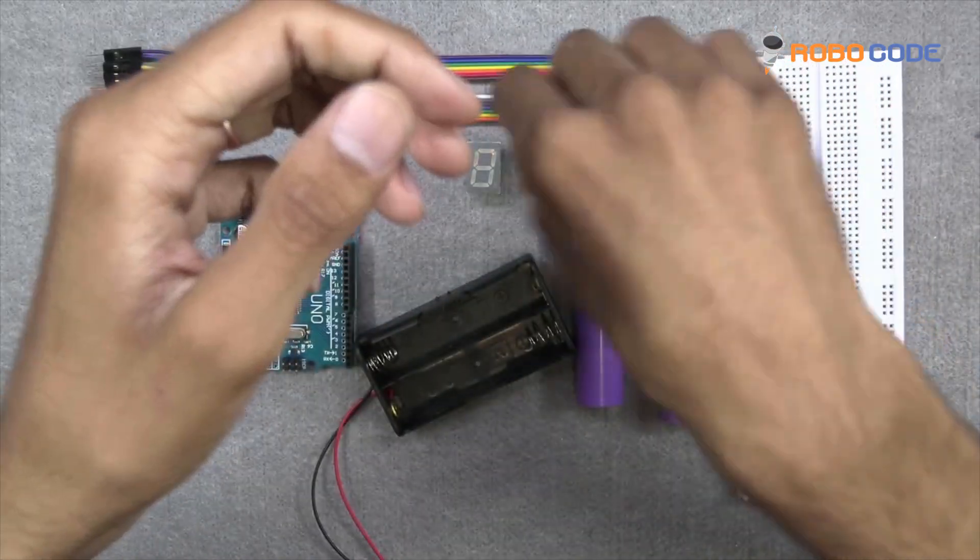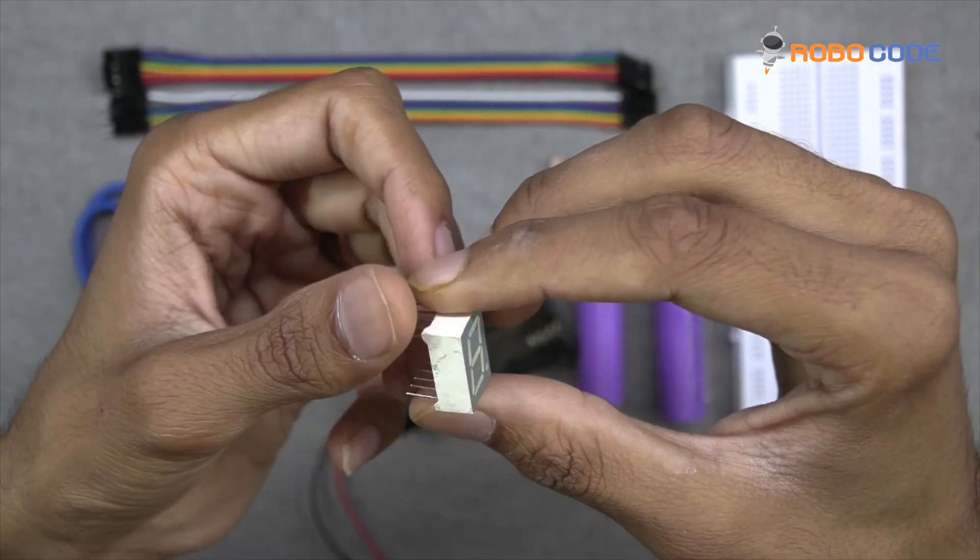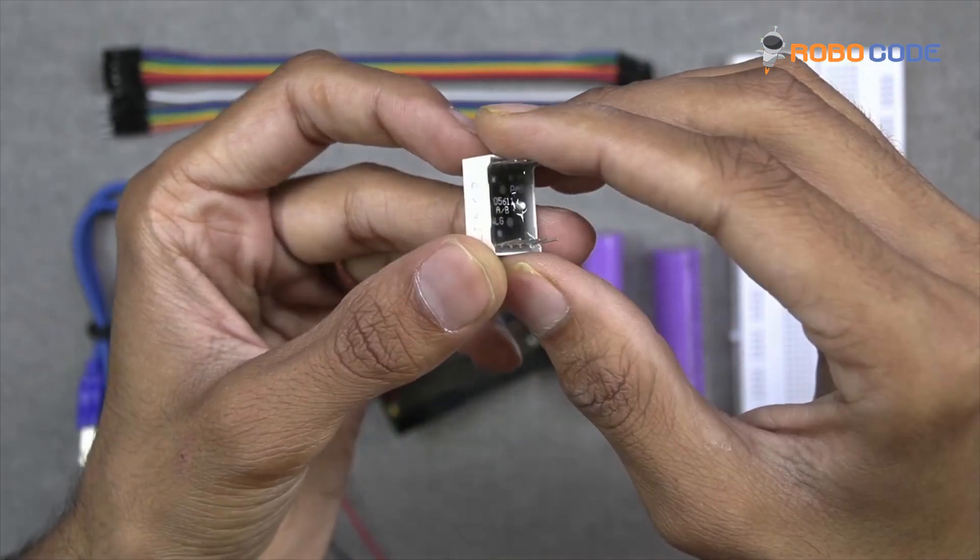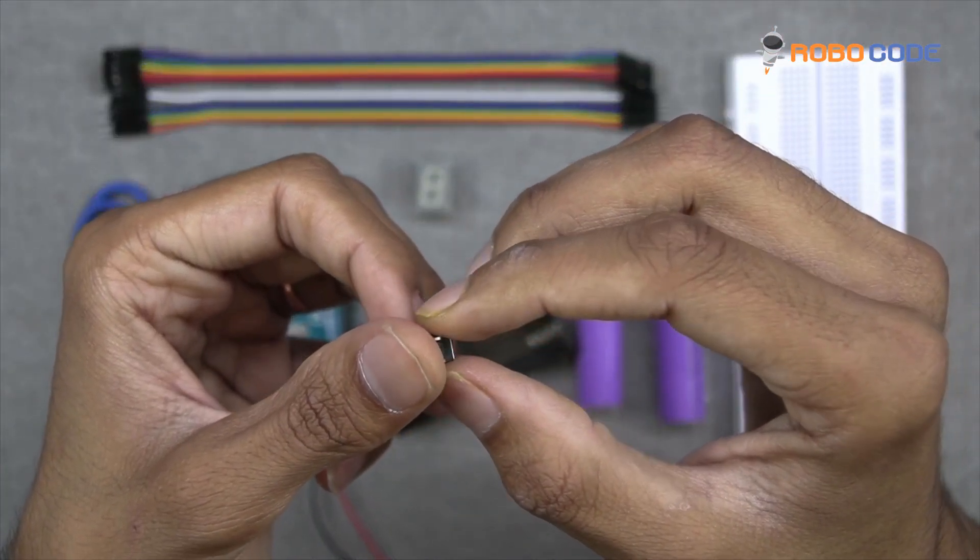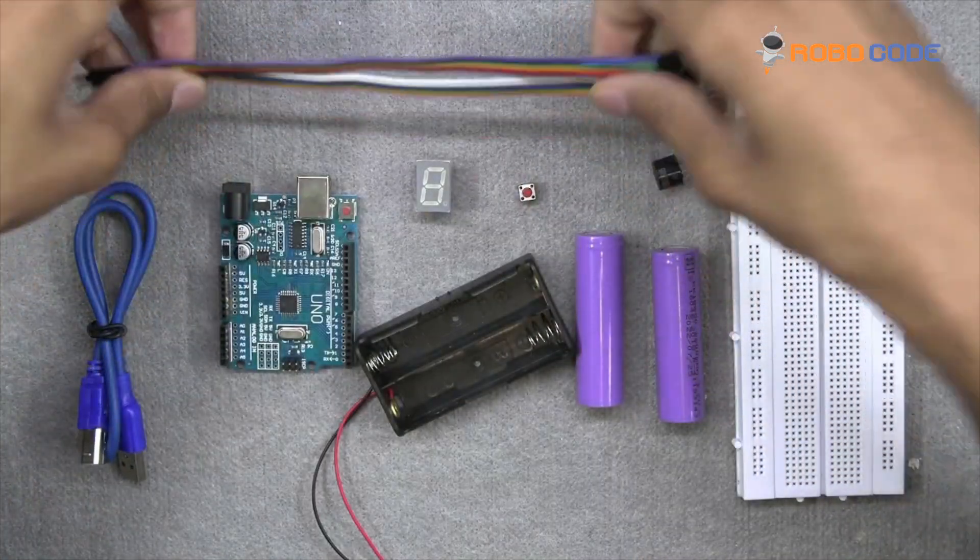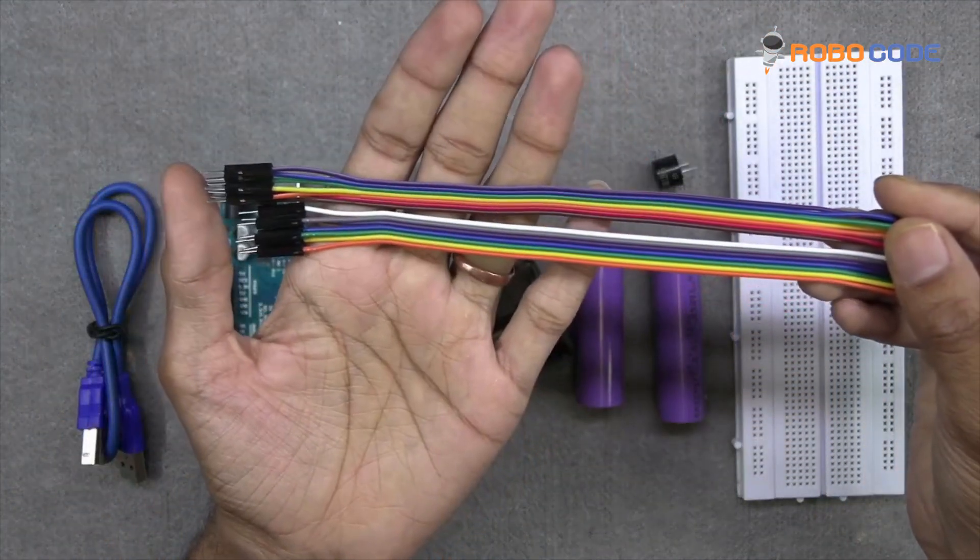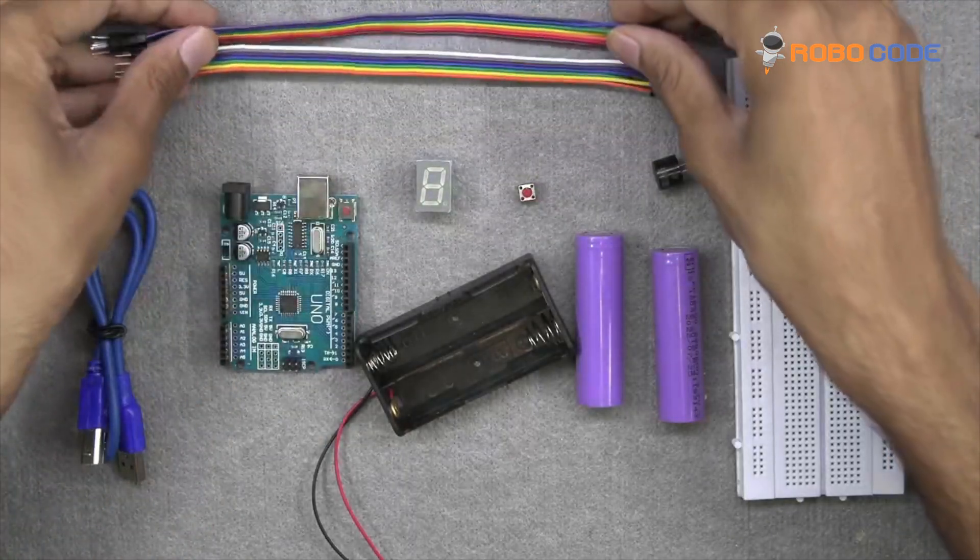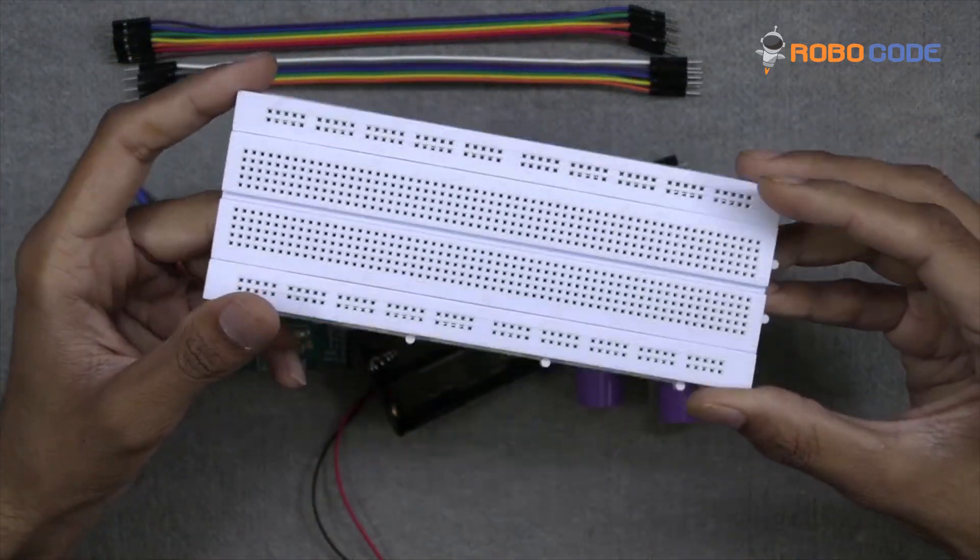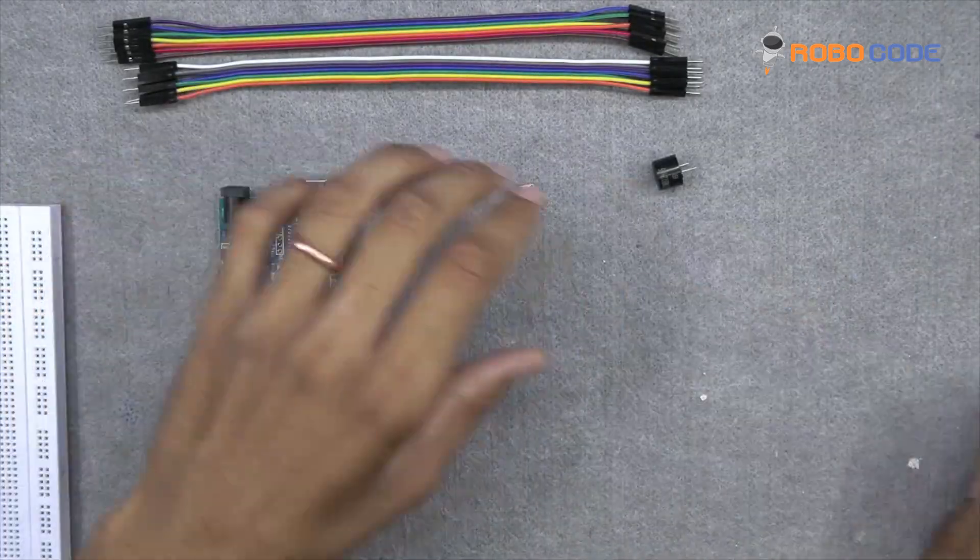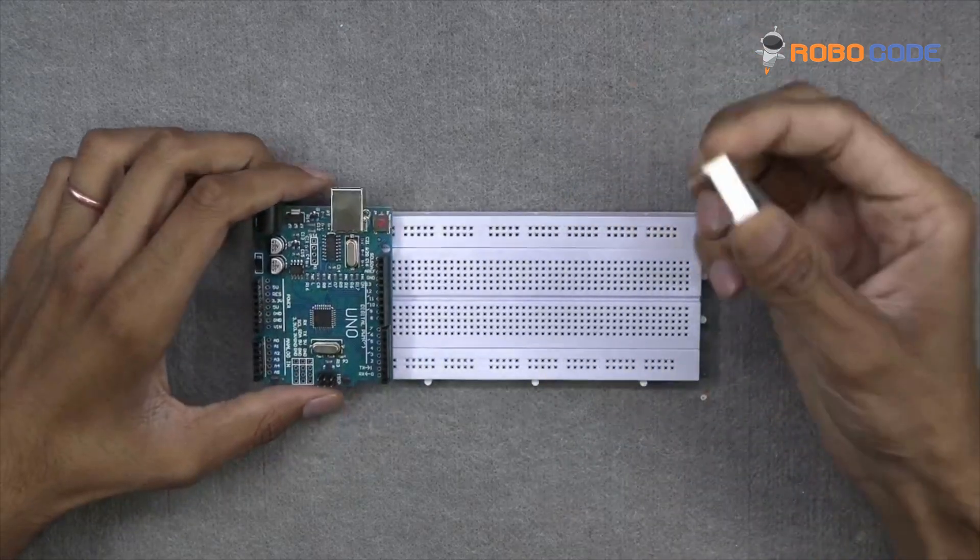One 7-segment display, one push button, and a few jumper wires, preferably male to male, and one breadboard with 800 beam. So let's create the circuit.